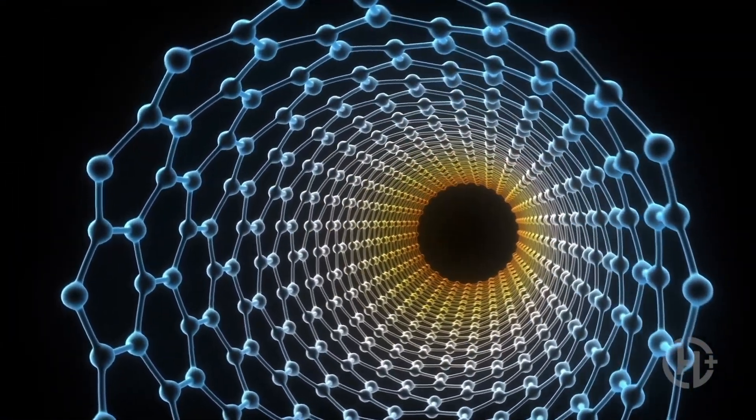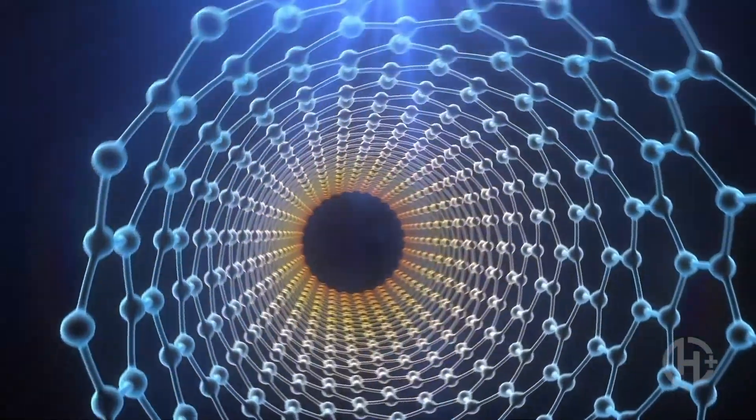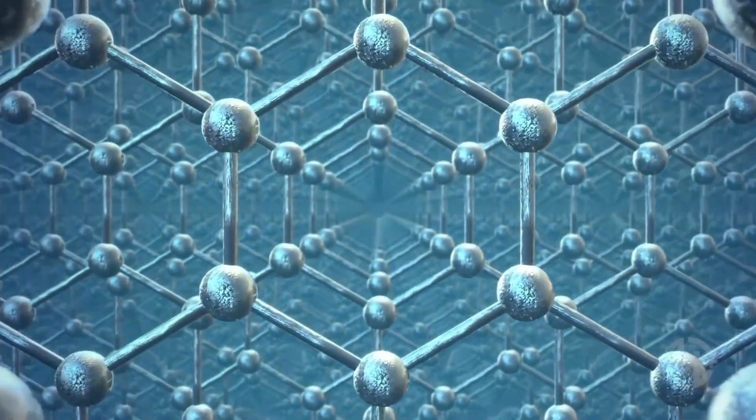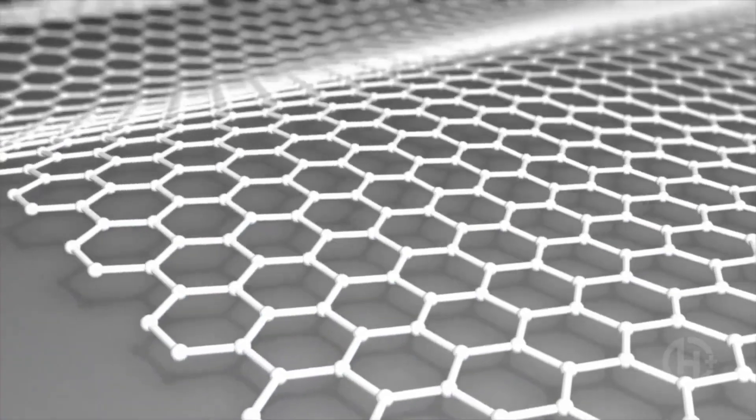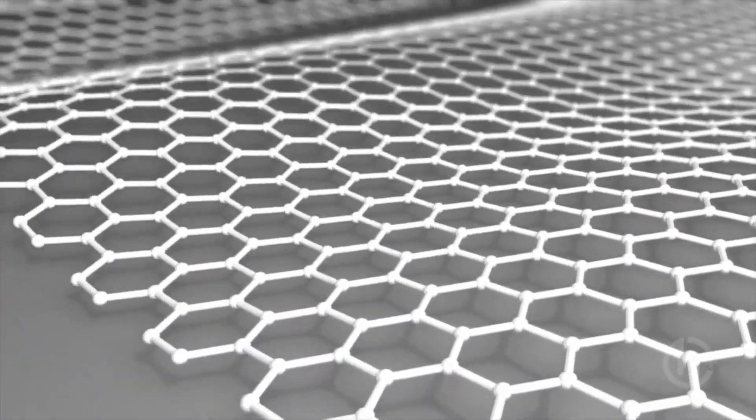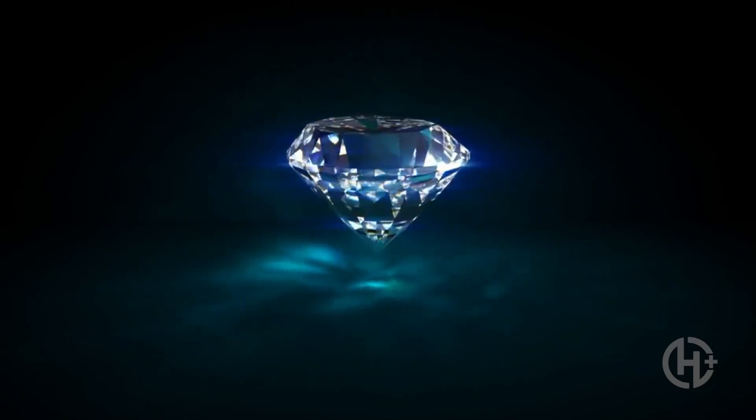Graphene itself is just a transparent 2D sheet of carbon only a single atom wide, and yet, it's one of the strongest materials known to humanity. You could stretch graphene by a quarter of its length, and because of its ultra-strong interatomic bonds, it'll still remain stiffer than diamond.